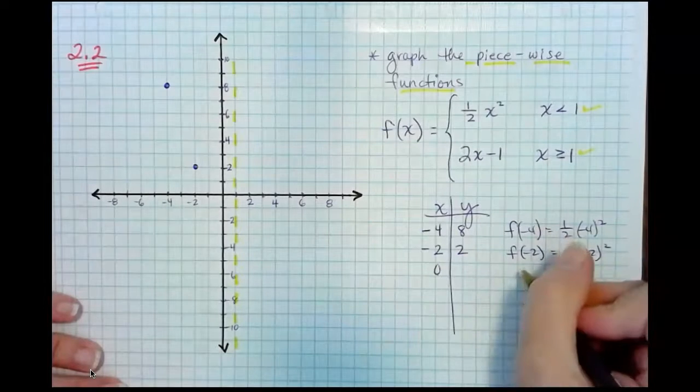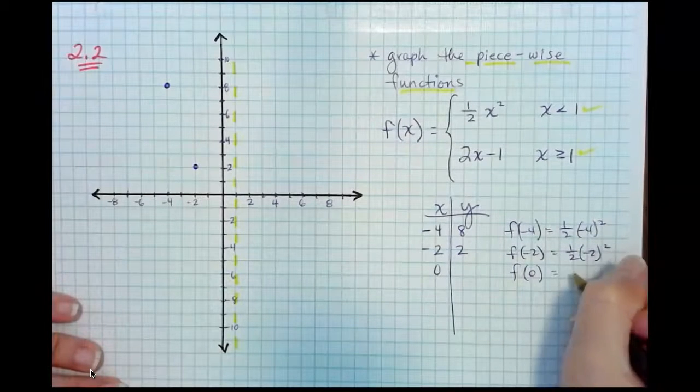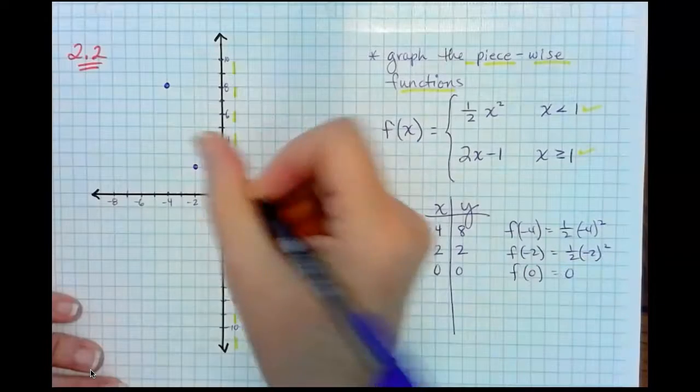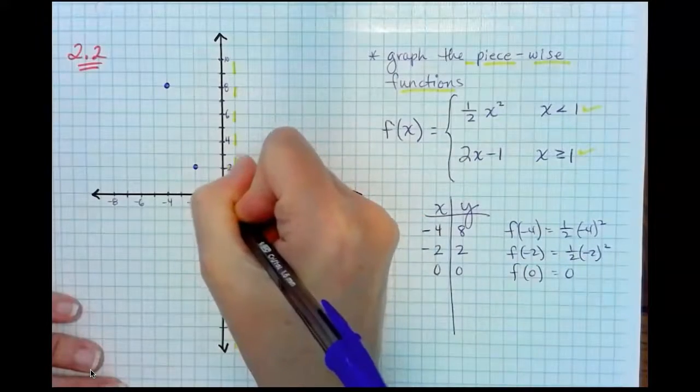Let's plug in the 0. This will give us our y-intercept. F of 0, of course, is 0. So 0, 0.